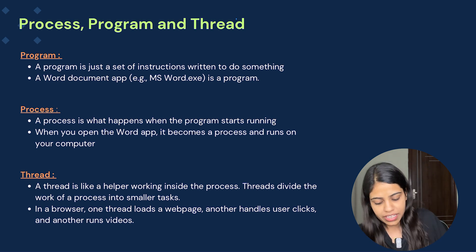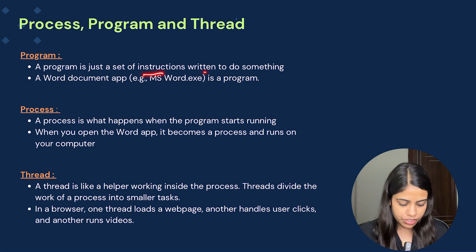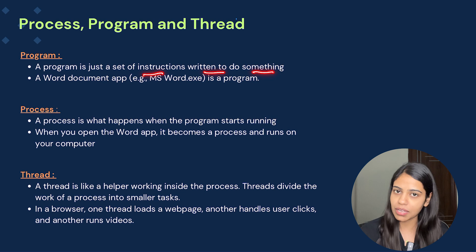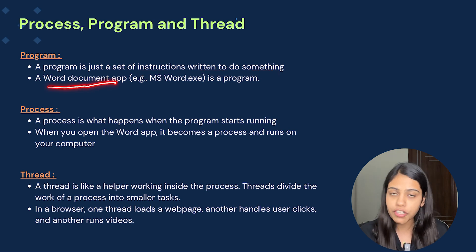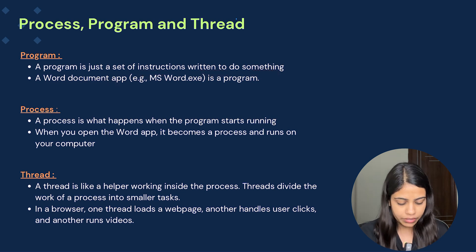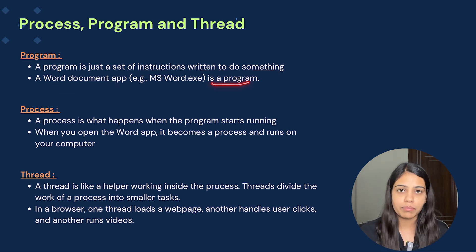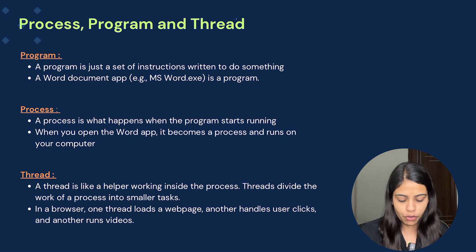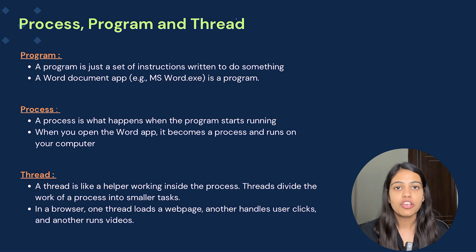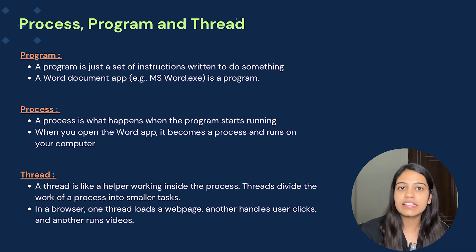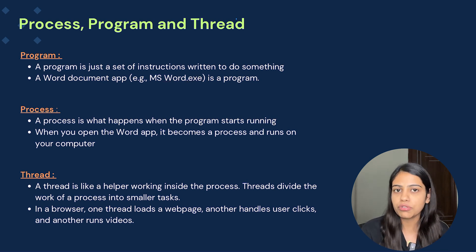A program is just a set of instructions written to do something. For example, a Word document app is a program because it is written in .exe format — so msword.exe. These are set of instructions which is needed to do any kind of task.